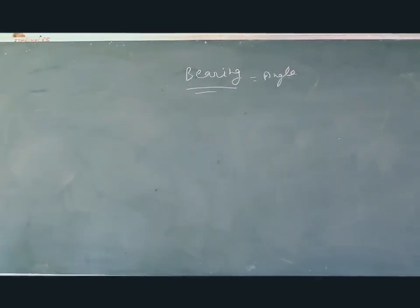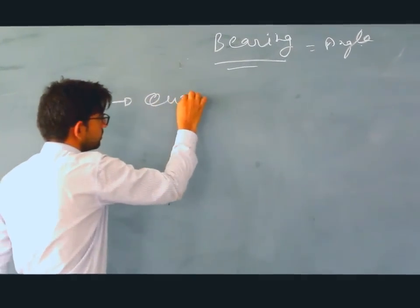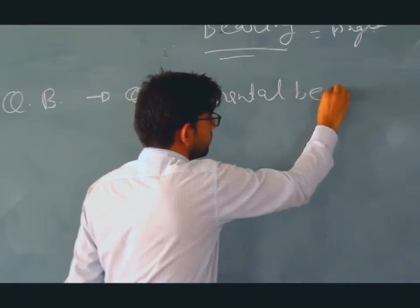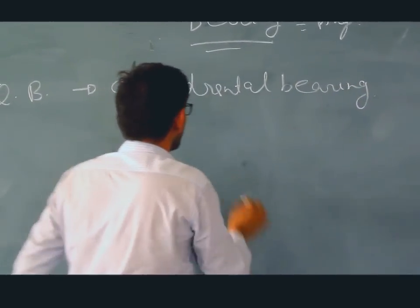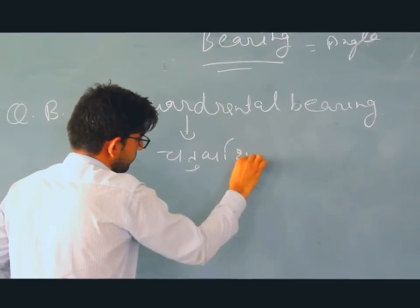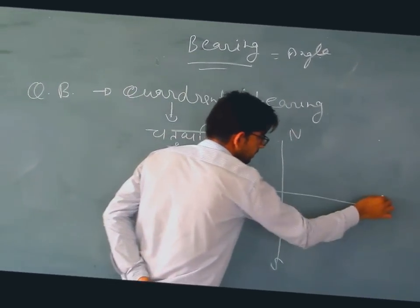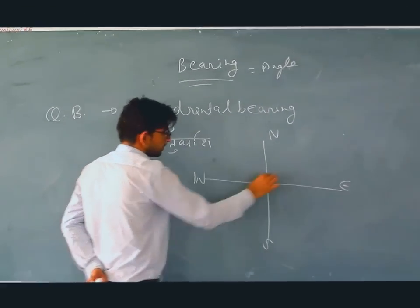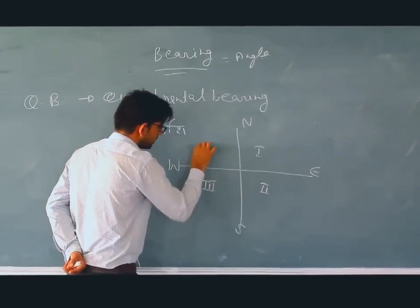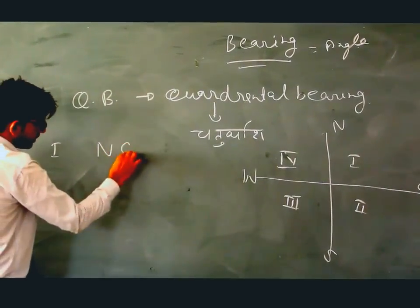I will tell you about QB - Quadrant Bearing. For QB, we use the four directions: N, S, E, W. We call them first, second, third, and fourth quadrants. The first quadrant notation is N-theta1-E.